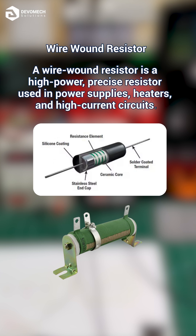A wire wound resistor is a high power, precise resistor used in power supplies, heaters, and high current circuits.